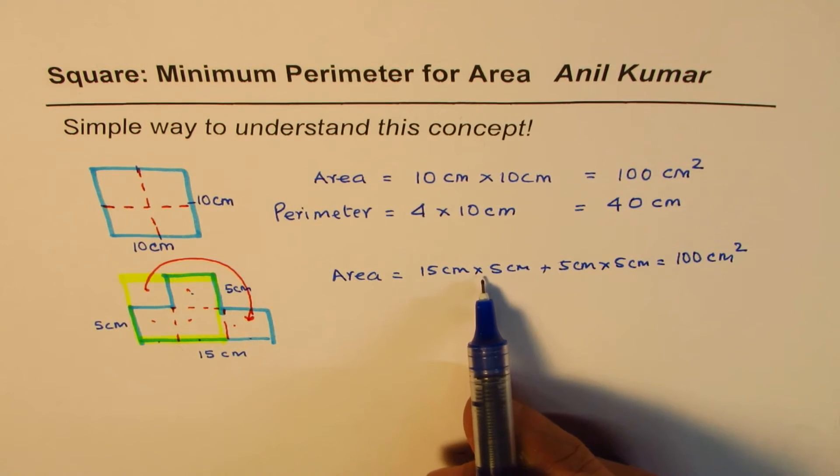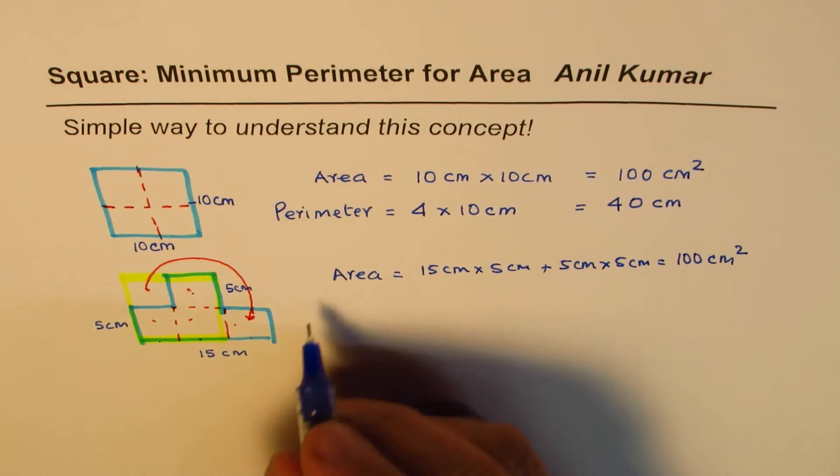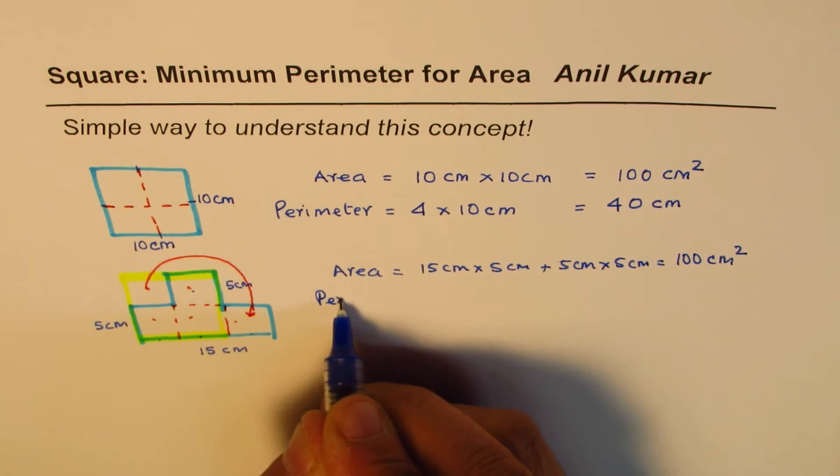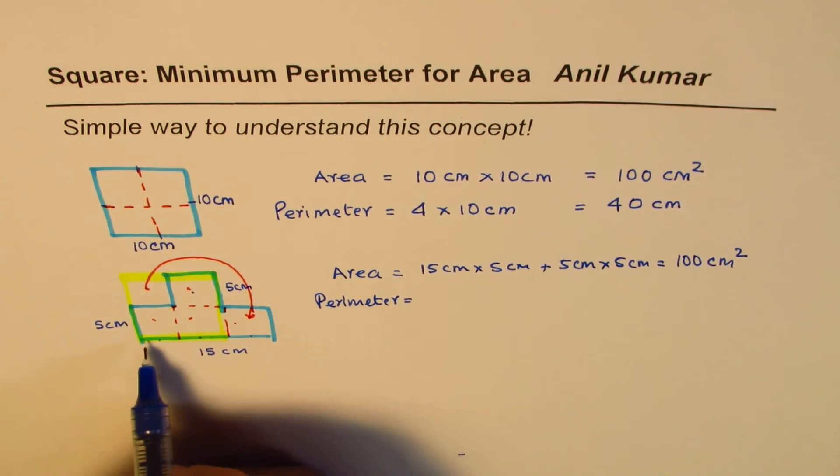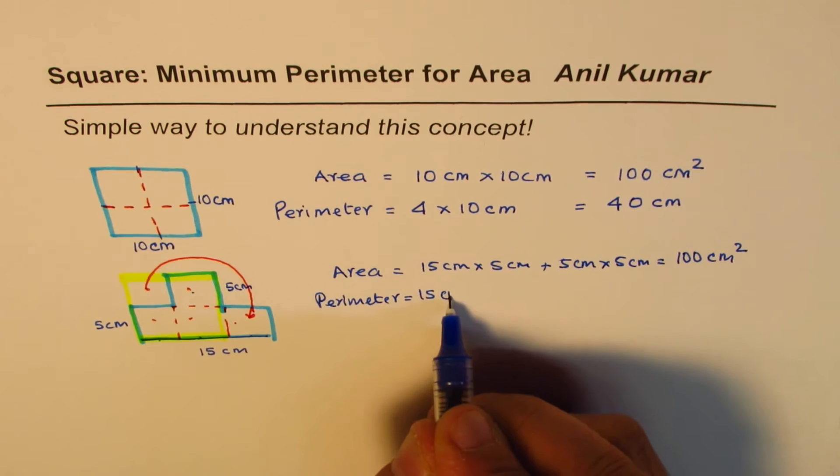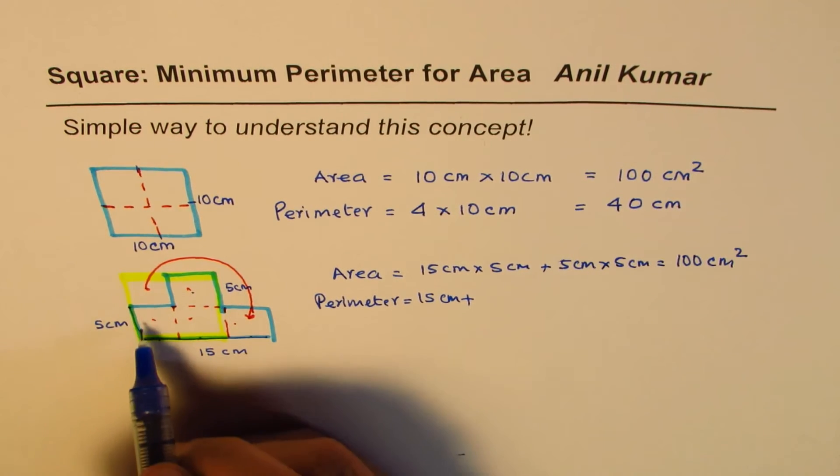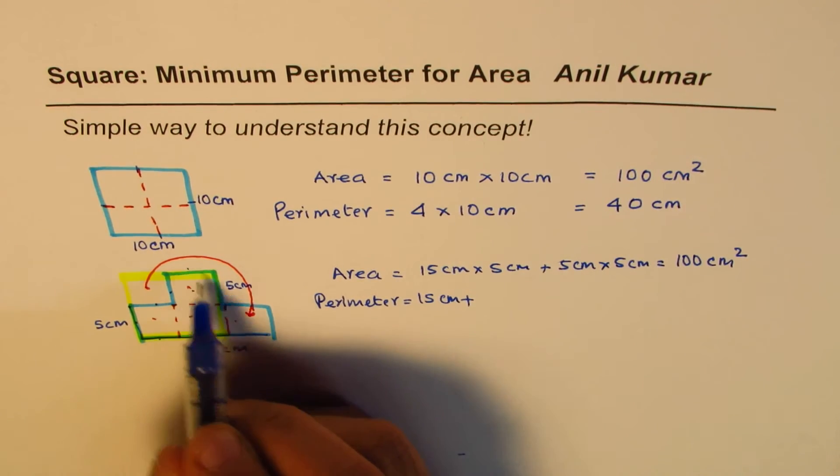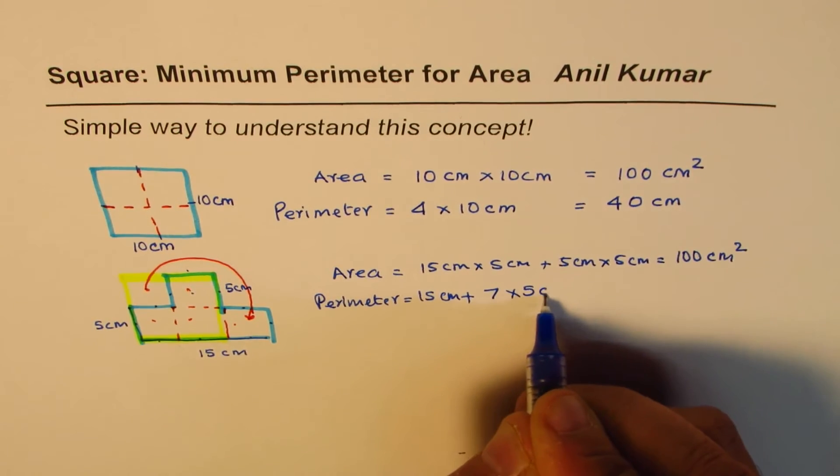But how about the perimeter? Perimeter now is one side is 15. Let's add plus five. So how many fives? One five, two five, three, four, five, six, seven fives, right? So seven times five centimeters.